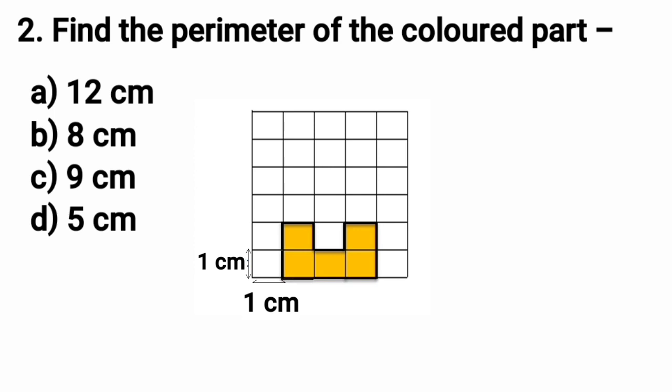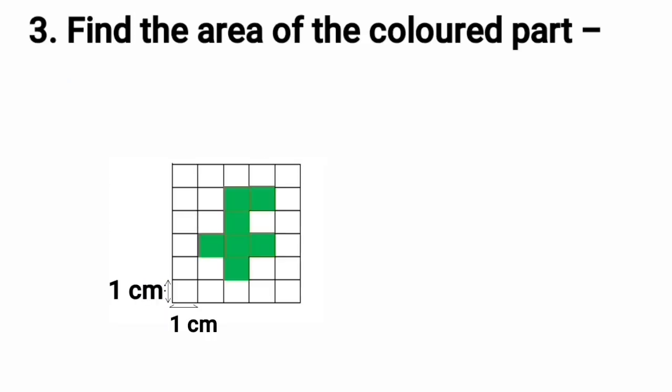So in this way, the perimeter of this colored part is 12 cm. Let's find which option has 12 cm as the answer. Yes, it is there at Option A. So we will put a tick mark at Option A. That is 12 cm. The perimeter of this figure is 12 cm.